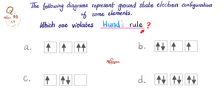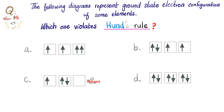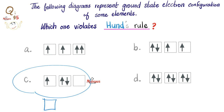Which of the following violates Hund's rule? Hund's rule says: before you pair electrons up, fill every orbital one at a time. So if you have 4 electrons, place one in each orbital first — 1, 2, 3 — then start pairing with the 4th in the same orbital but with opposite spin to satisfy Pauli. The answer is C. The correct configuration should have one electron in each orbital before any pairing.